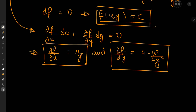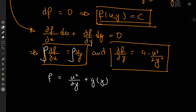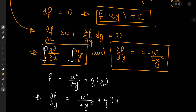Taking the first equation and integrating with respect to u, we get f equal to u²/(2y) plus some function g purely of y. To work out this function, we differentiate f with respect to y partially, which gives us minus u²/(2y²) plus the derivative of g with respect to y.